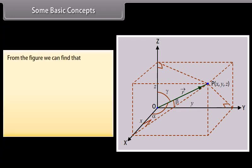From the figure we can find that: cos alpha equals X divided by mode of vector R; cos beta equals Y divided by mode of vector R; cos gamma equals Z divided by mode of vector R.